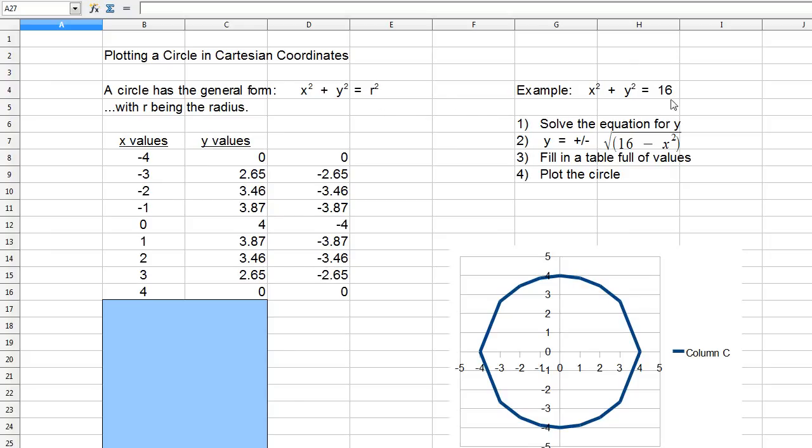For example, x² + y² = 16. Since the equation form is r², the square root of 16 is 4, so the radius is 4. I have a circle here that doesn't look very good, and that's the issue I'm going to show you about why Cartesian coordinates don't work great for plotting circles.